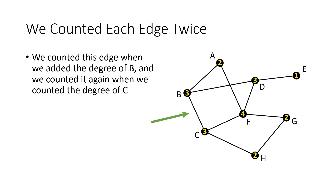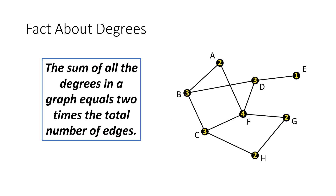It turns out that's not a coincidence — we counted every edge twice. When we counted the degree of every vertex, each edge was counted once when we counted the degree of one endpoint, and counted again when we counted the degree of the opposite vertex. So that's a nice fact about degrees in a graph: the sum of all the degrees equals two times the total number of edges. If you're figuring out the degrees in your graph, that's a good way to check your answer — make sure all your numbers add up to two times the number of edges.